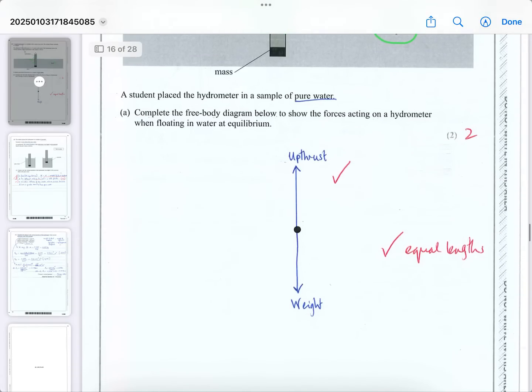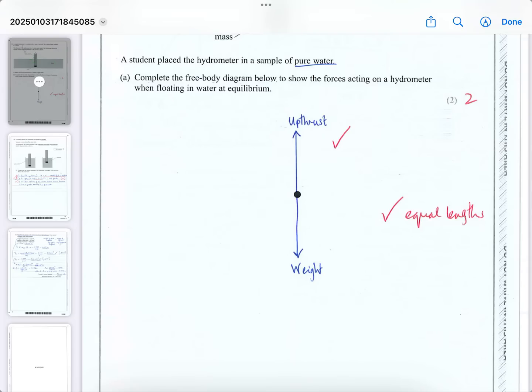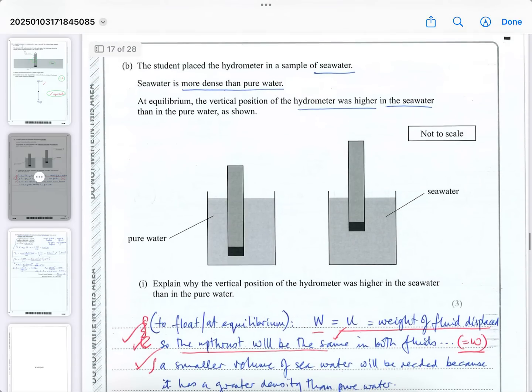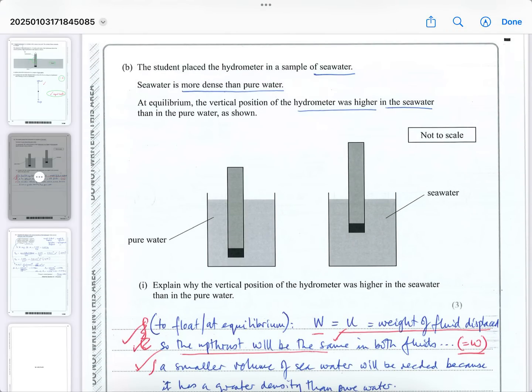The student placed a hydrometer in a sample of pure water, and you've got to complete the free body force diagram to show the forces acting on the hydrometer. If you can't do this, then you won't be able to understand what the question is about. The weight and the upthrust are balancing each other. That's why it's floating. You get one mark for labeling the arrows up and down correctly, and one mark for making sure that the up arrow and down arrow are equal in length. Otherwise, it won't be balanced. So first thing you do when you watch my videos, get in the habit of pressing that like button.